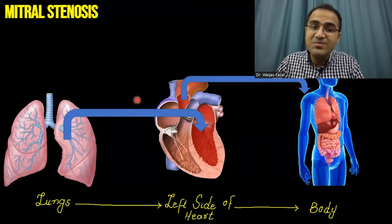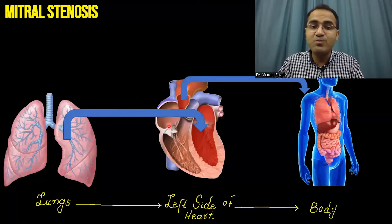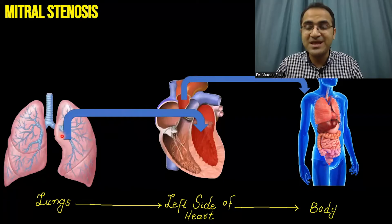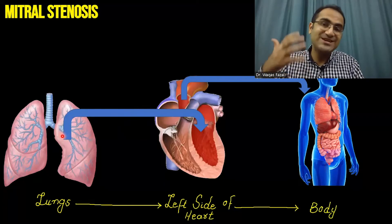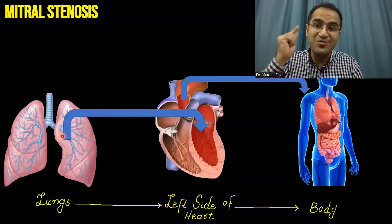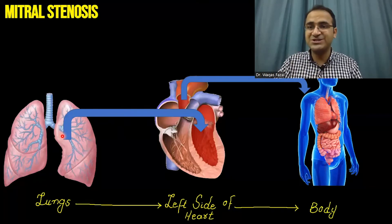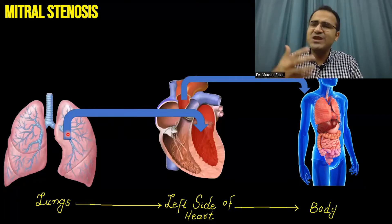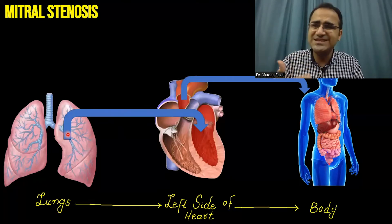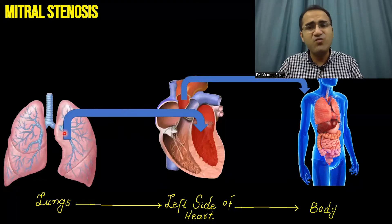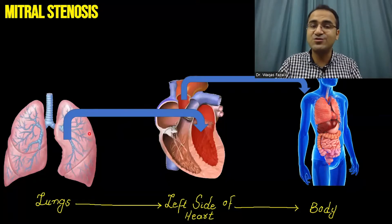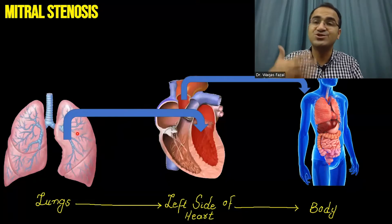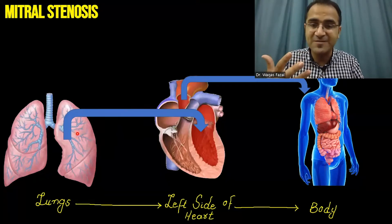Then this blood will be backed up in the lungs. Whenever blood is backed up in the lungs, there is pulmonary edema and pulmonary hypertension. The patients will have symptoms of dyspnea, hemoptysis, and shortness of breath. A very common symptom of patients with severe mitral stenosis is that the patient will present with shortness of breath.